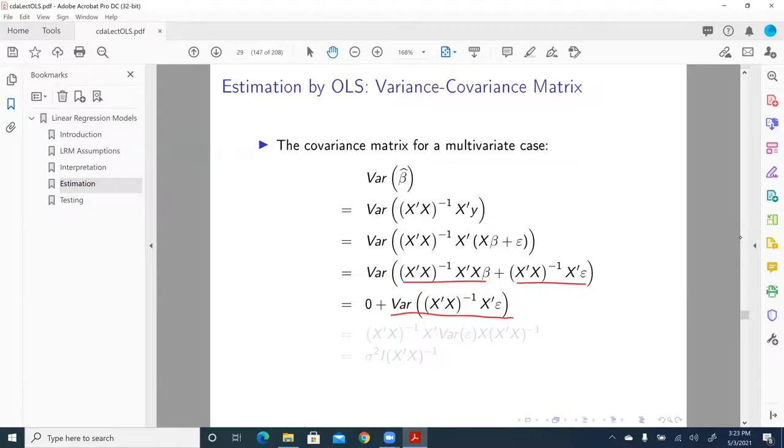The only thing that's going to give us a little bit of headache is epsilon. So what is the covariance between epsilon and other elements? For example, X matrix and beta. Again, zero, based on the third assumption, the most important assumption that I talked about: zero conditional mean.